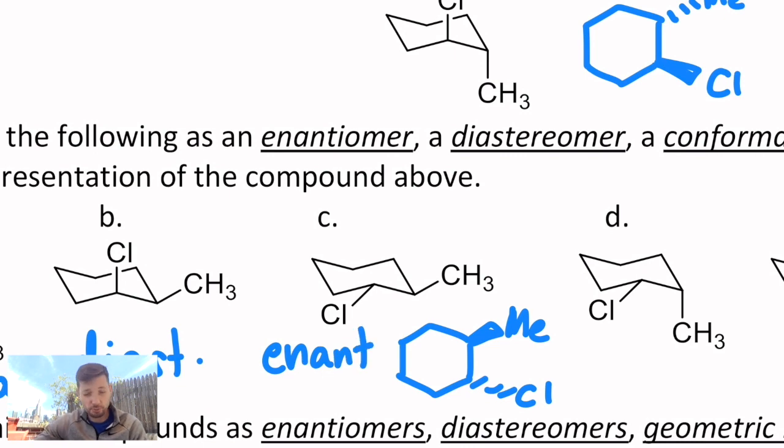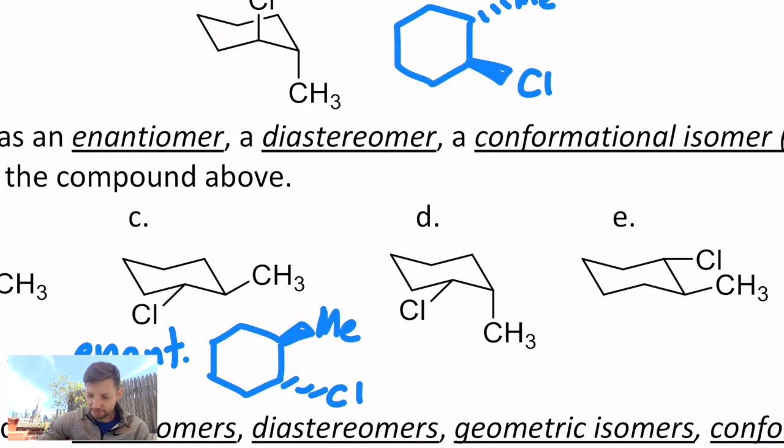That's a red flag for an enantiomer. So this is a stereoisomer and it would be a mirror image of the original one. When I get to D, the methyl looks like it's in the same orientation, but the chlorine has inverted. So that's a diastereomer.